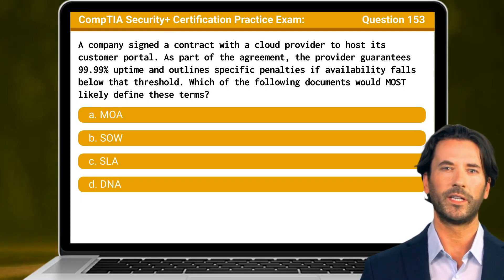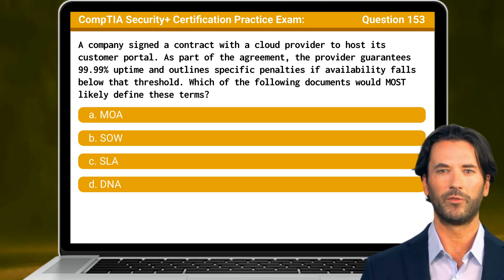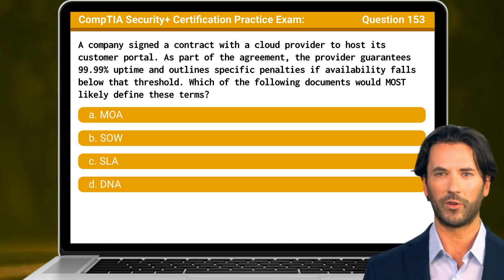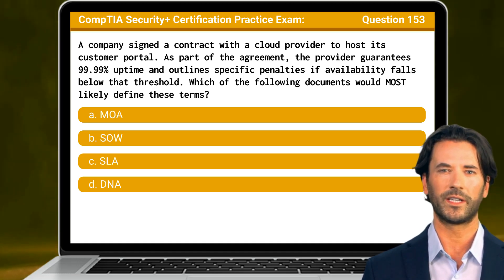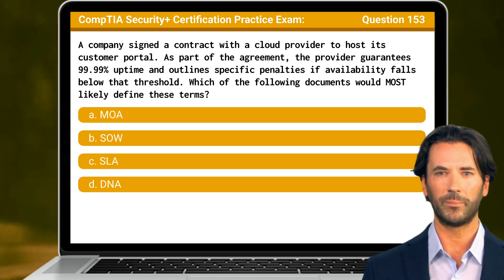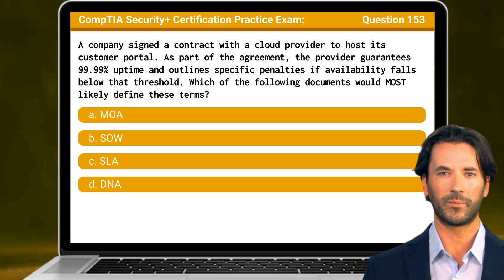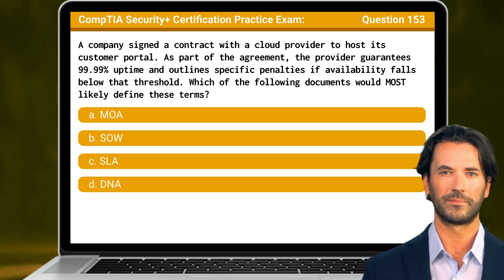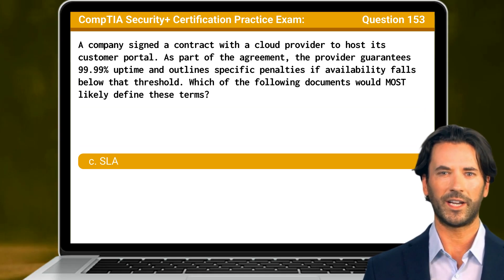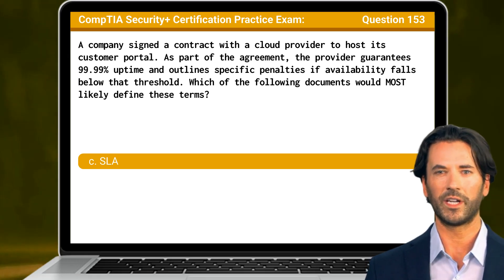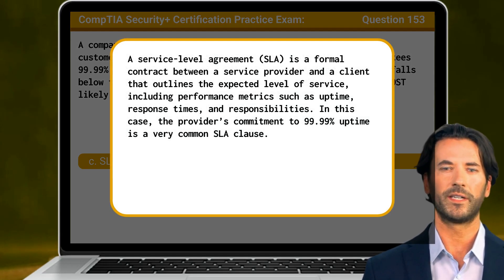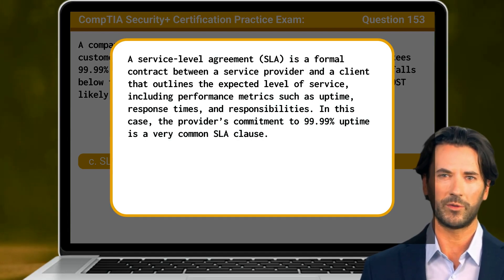Question 153: A company signed a contract with a cloud provider to host its customer portal. As part of the agreement, the provider guarantees 99.99% uptime and outlines specific penalties if availability falls below that threshold. Which of the following documents would most likely define these terms?